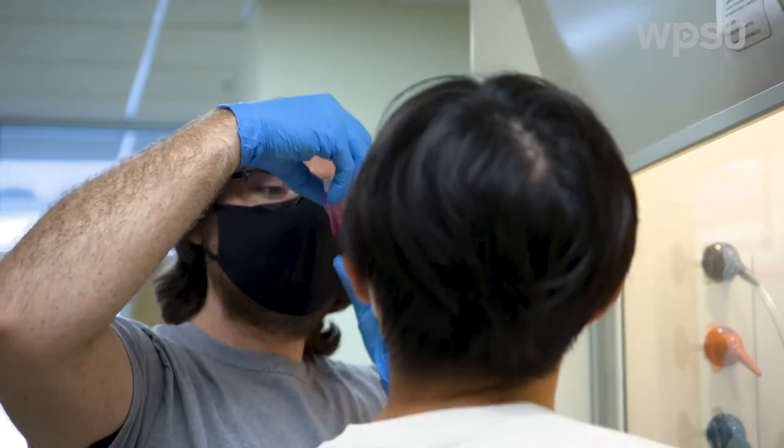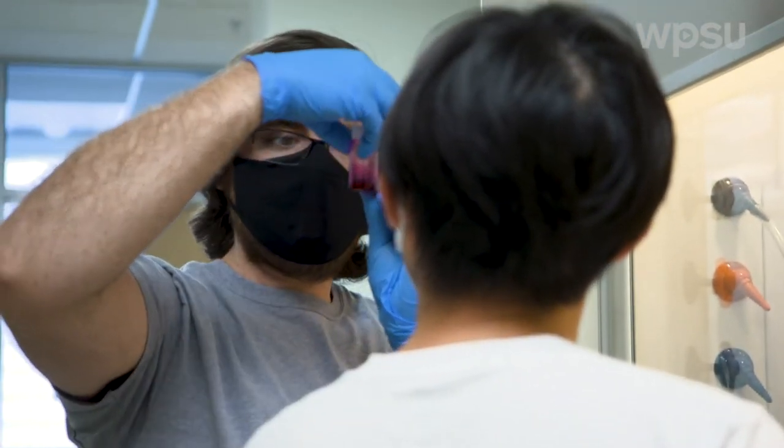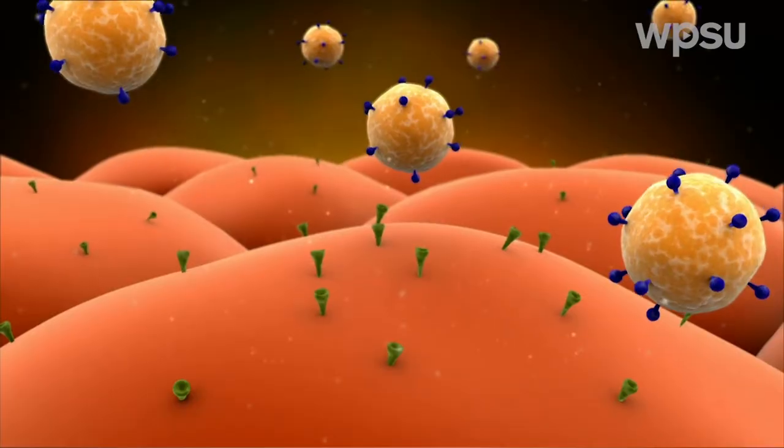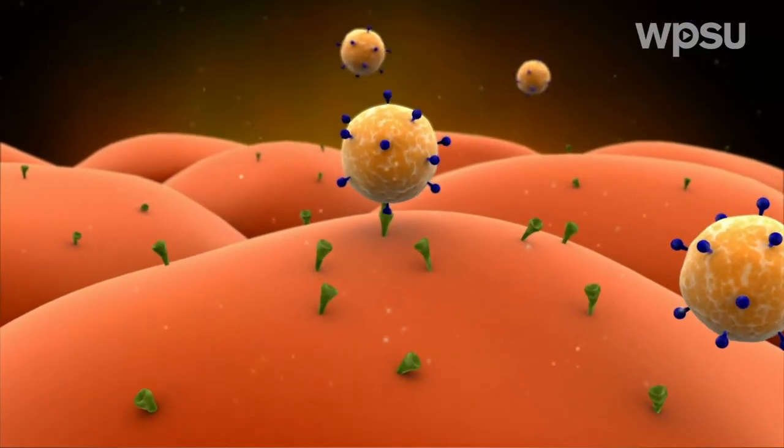Whenever you get sick from the flu, there is a virus that is binding to the surface of your cells, and it's because of the surface properties that this virus can bind.